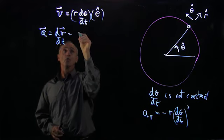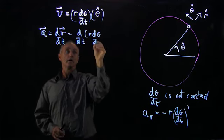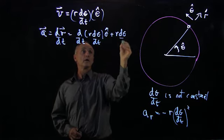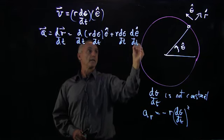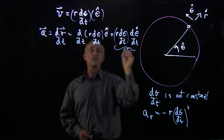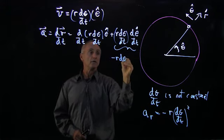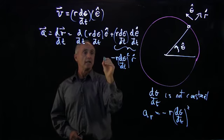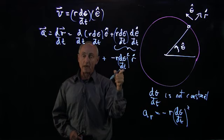So the derivative will be the derivative of the first term times the second term plus the first term times the derivative of the second term. Now we've already analyzed this piece. And this was precisely minus r (dθ/dt) quantity squared r hat. That was always the non-zero radial acceleration.